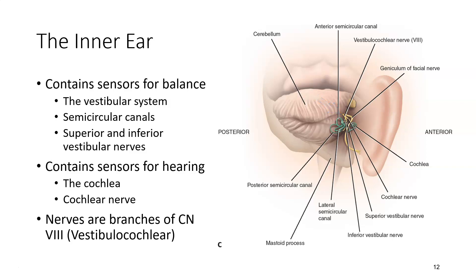The inner ear also contains our sensors for hearing, the cochlea. Information coming from the cochlea stimulates the cochlear nerve. All of these nerves are branches of our eighth cranial nerve, the vestibulocochlear nerve.